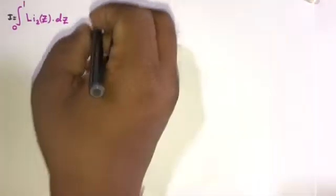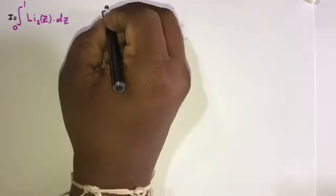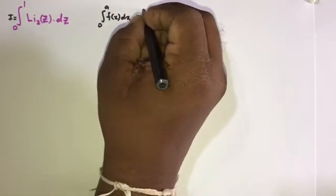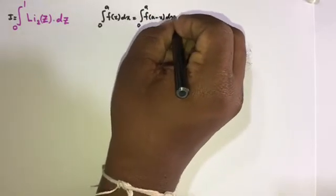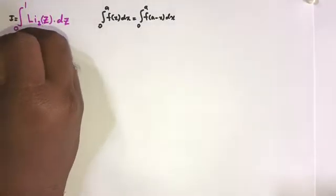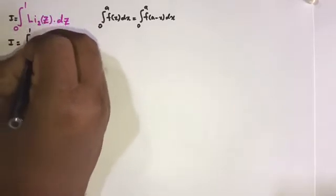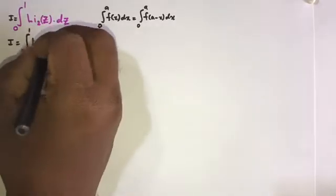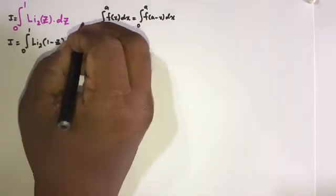We know King's property of definite integration: the integral from 0 to a of f(x) dx is equal to the integral from 0 to a of f(a minus x) dx. Applying this here, I is equal to the integral from 0 to 1 of the dilogarithm of (1 minus c) dc.